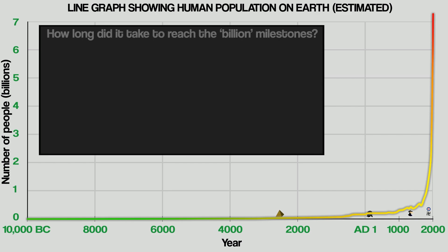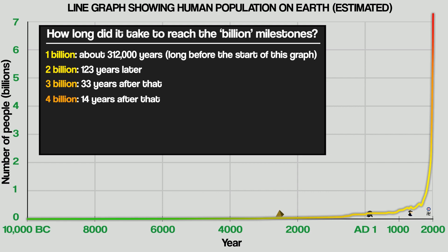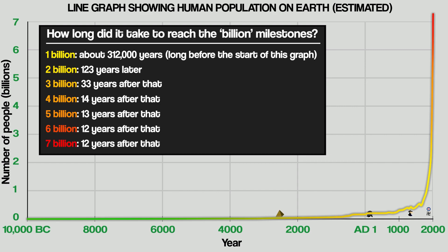So there you go. It took the human race almost 312,000 years to reach 1 billion, another 123 years to reach 2 billion, 33 more years to get to 3 billion, 14 years to get to 4 billion, 13 years to get to 5 billion, 12 years to get to 6 billion, and another 12 years to get to 7 billion.